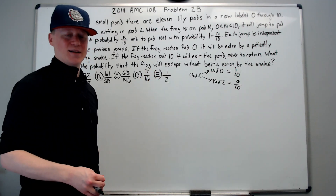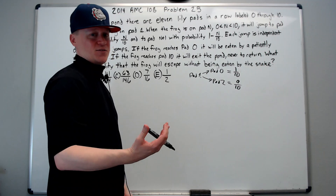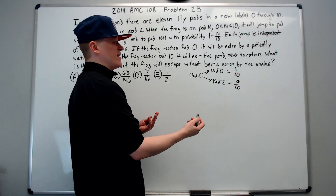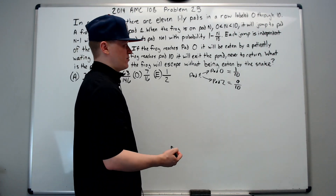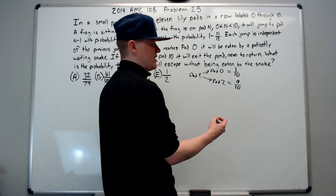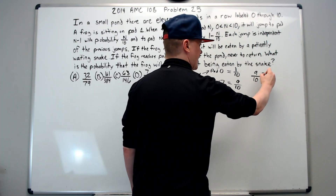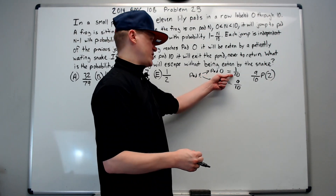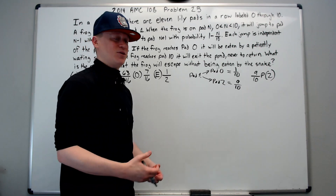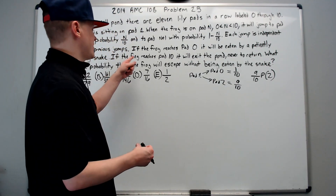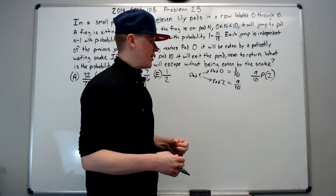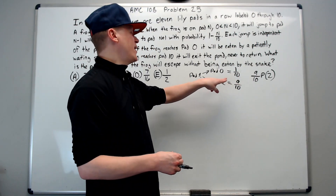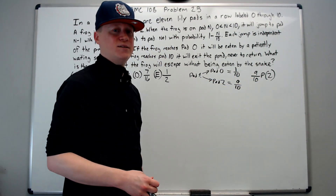Kind of a fun problem — usually they don't have some dire consequence for the frog not escaping, or maybe it's a good consequence for the snake. We need to think about this. You can say that the chance he survives, because he starts on pad 1, is just 9 tenths times the probability that he survives from pad 2. Because if he goes to pad 0, which is a 1 in 10 chance, he's not going to survive.